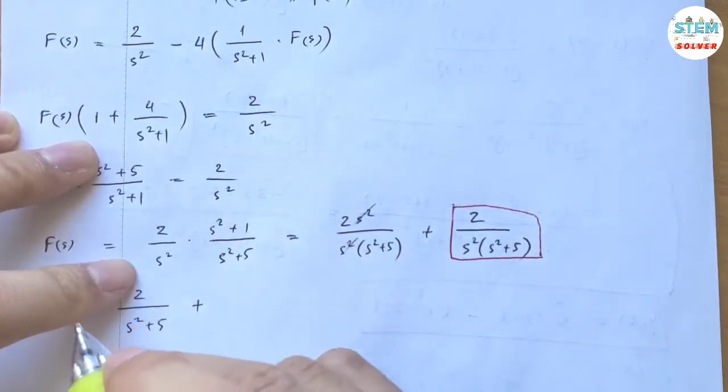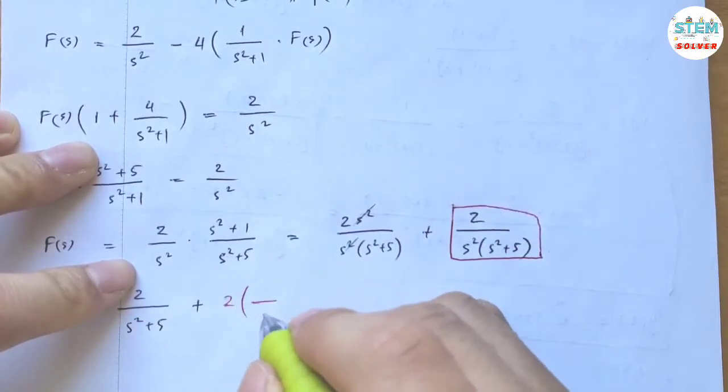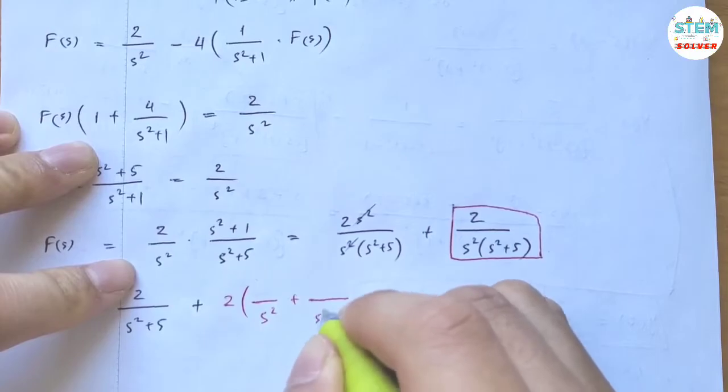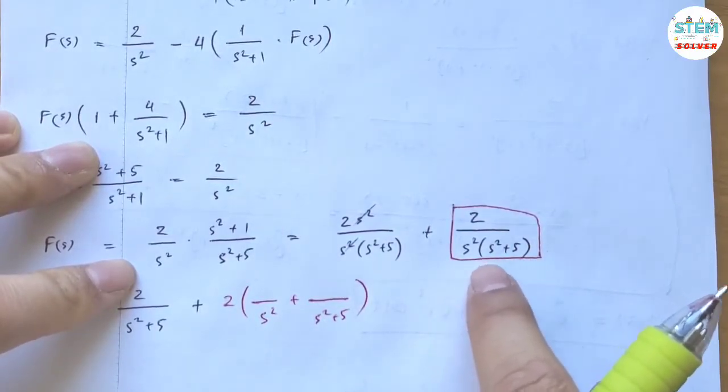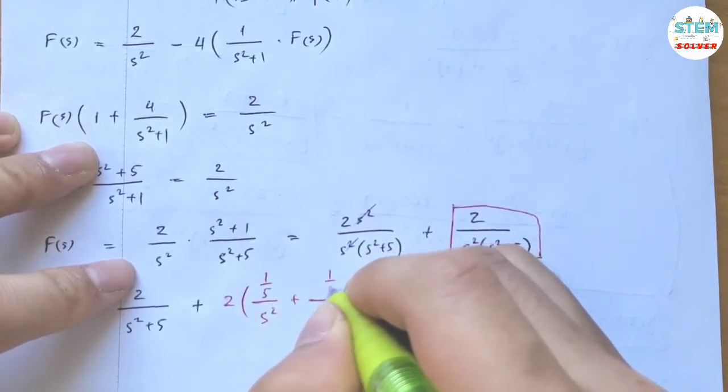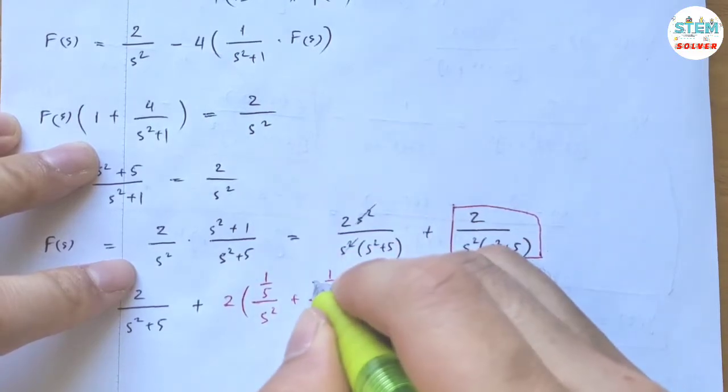For this one, let me factor out the 2 first. And this fraction can be obtained from something over s² plus something over s² + 5. And as you can see, they are off by 5, so I'm going to have 1/5 on the top. The next step is to determine which one has the negative sign. As I experienced, the bigger one, which is this one, will carry the negative sign.